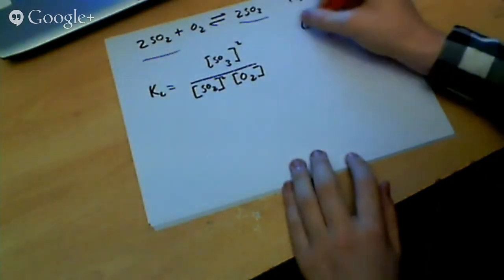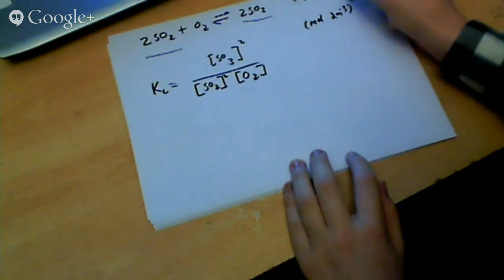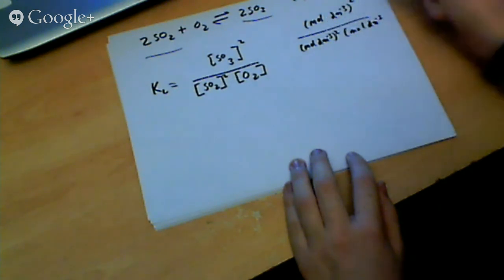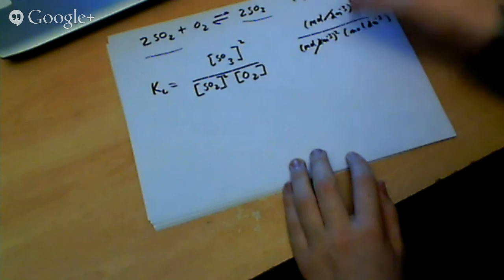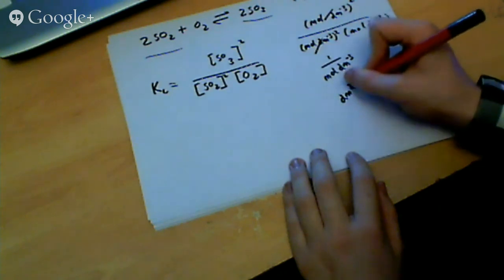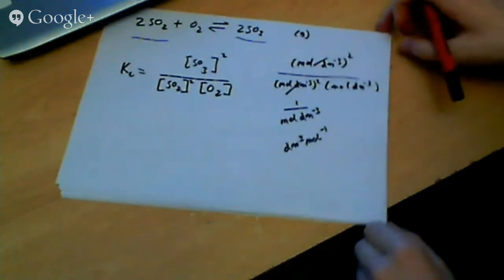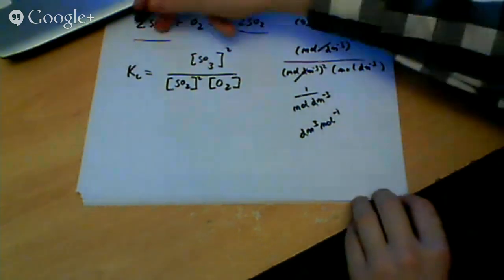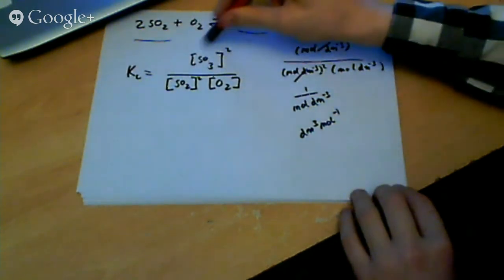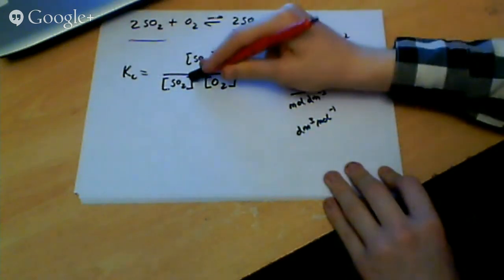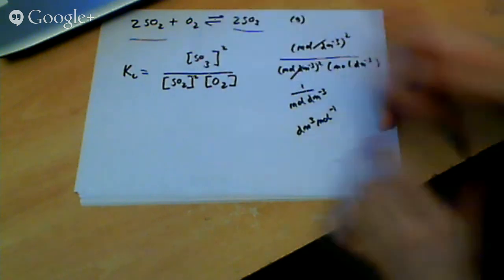The units for Kc are worked out: we've got mol/dm³ squared over mol/dm³ squared times mol/dm³. These two cancel, meaning overall we have 1 over mol/dm³, which equals dm³ mol⁻¹. You can write that in any order. To get that — if you're given the concentrations, you just plug them in with the squared and work out Kc. If you're given Kc and told to work out the concentration, times Kc by the SO₂ concentration including the squared, then square root it to get rid of the squared, and you've got your concentration.